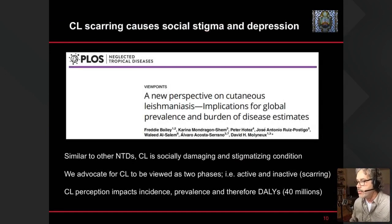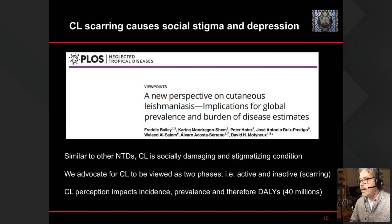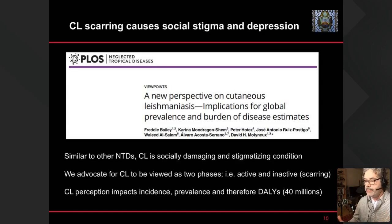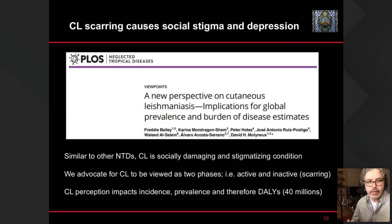In collaboration with several colleagues including David Molyneux, we came out with suggestions for recalculating and estimating the impact of cutaneous leishmaniasis worldwide. We advocate that leishmaniasis should be classified as active when the ulcer is still open and inactive when scarring has happened. By doing this conservative estimation, we arrive at a figure of at least 40 million people worldwide suffering from leishmaniasis at different levels of infection.